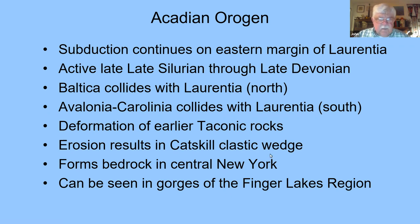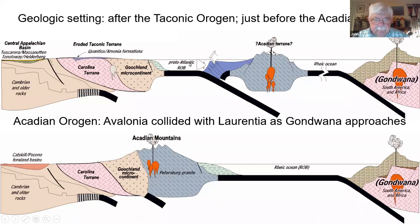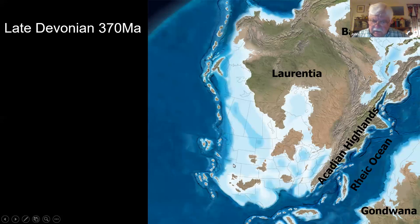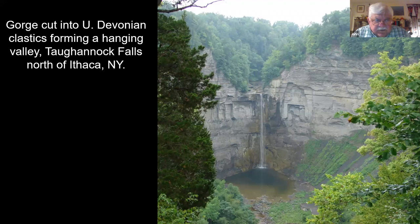Here is the geologic setting after the Taconic Orogeny and just before the Acadian - here's everything lining up to slam into Laurentia, producing more volcanoes. This is the Iapetus Ocean being replaced by the Rheic Ocean. And here's the late Devonian - you can see the Rheic Ocean has taken over, we have the Acadian highlands right here, and Gondwana is fairly close to Laurentia.